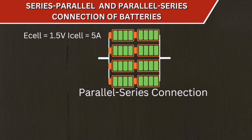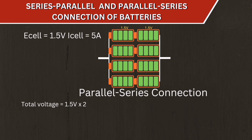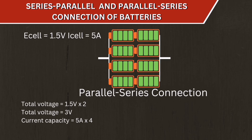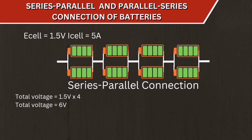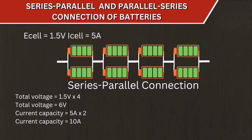Another configuration is parallel-series with four parallel groups of two cells in series. The voltage is 1.5 volts times 2, equal to 3 volts, and the current capacity is 5 amperes times 4, equal to 20 amperes. There is also a configuration yielding 1.5 volts times 4, equal to 6 volts, with a current capacity of 5 amperes times 2, equal to 10 amperes.